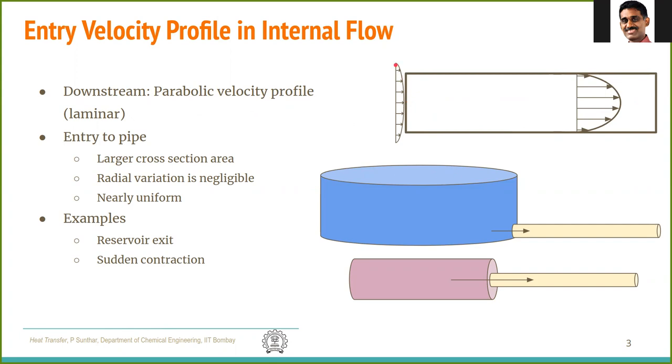At the inlet, the conditions are determined by the flow of the origin section. For example, if we have a very large cross section area here for the inlet, it comes from a reservoir or some other pipe of larger cross sections. So this is the pipe of interest.